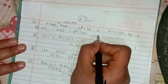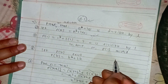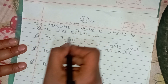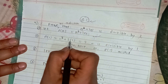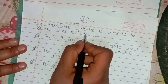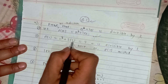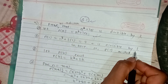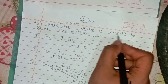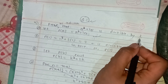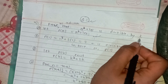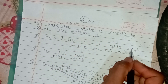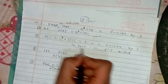First, I am going to show for n equals 1. P(1) should exist. P(1): 1 cube plus 2 into 1 equals 1 plus 2 equals 3. So 3 is divisible by 3. This statement is true, and it is divisible by 3.